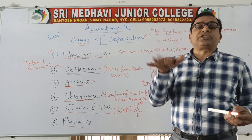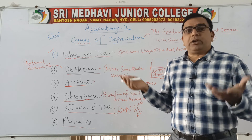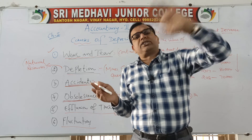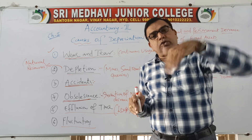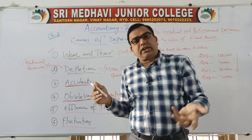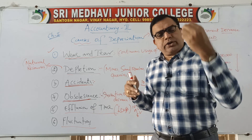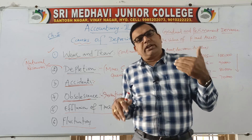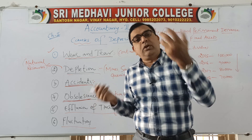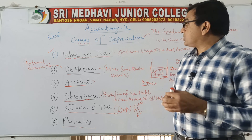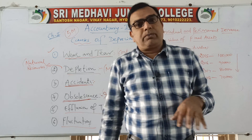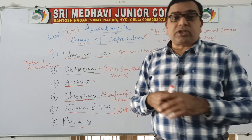The next cause is fluctuations — ups and downs in the price of assets like machinery, land, buildings, jewelry, iron, and steel. Market rates are not fixed; they increase or decrease. If the asset value shows a decreasing trend due to decreased demand, increased supply, government policy, or consumer taste and preference, the price falls down. Because of such price fluctuations, the asset value may come down. These are the causes of depreciation — a very important question worth five marks. You may get one theory and one problem, or two problems and one theory.